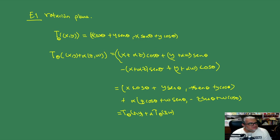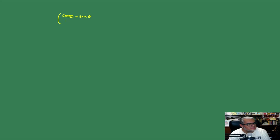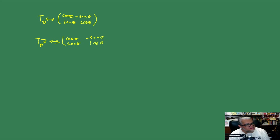Si se fijan, esta transformación tiene una matriz asociada con una forma muy característica: [[cos(theta), -sin(theta)], [sin(theta), cos(theta)]]. Entonces T_theta estaba asociada con esta matriz, y aplicar T_theta a un vector x es lo mismo que multiplicar esa matriz por el vector columna x.